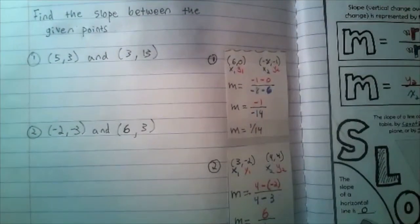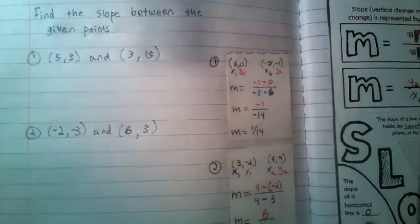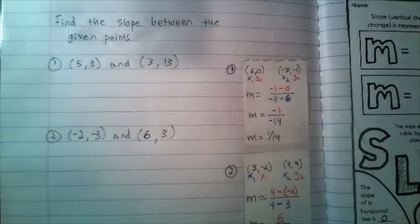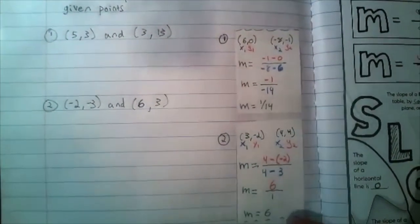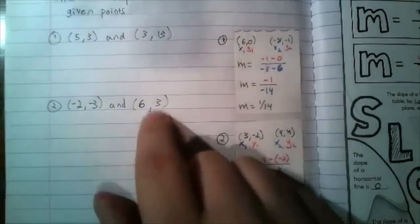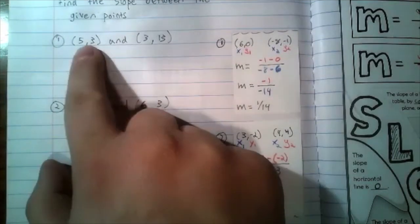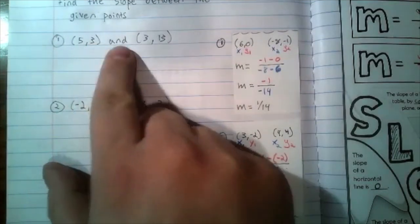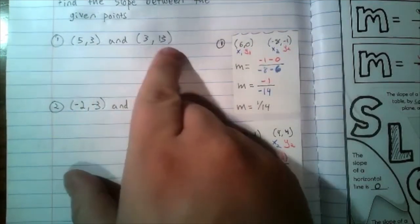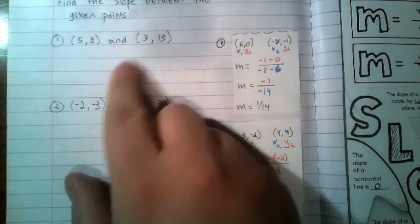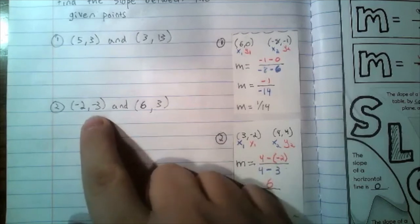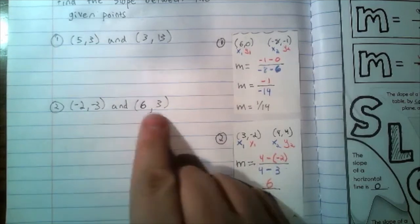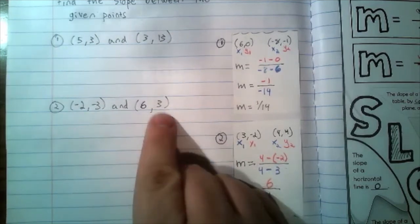On the left side of your book, I also want you to do the following practice problems: find the slope between the given points (5, 3) and (3, 13); and (−2, −3) and (6, 3). Use your slope formula and label x₁, y₁, x₂, y₂ for each. When you're done, show your teacher, and then you can move on to the practice problems.